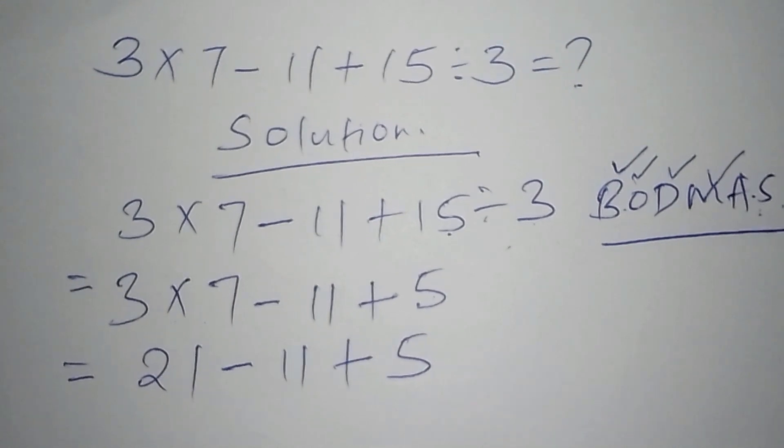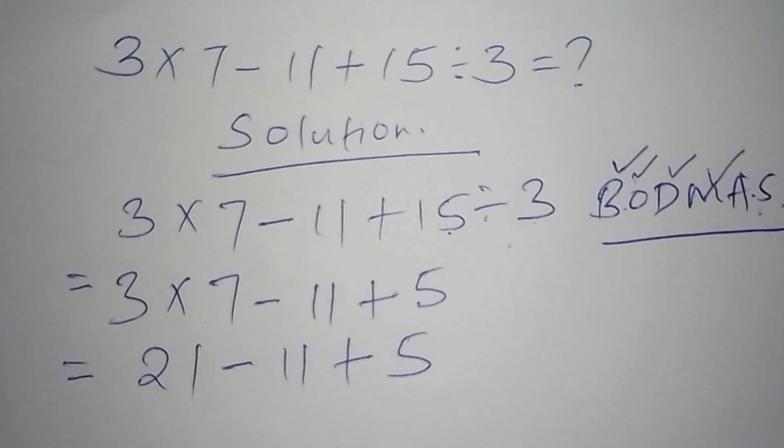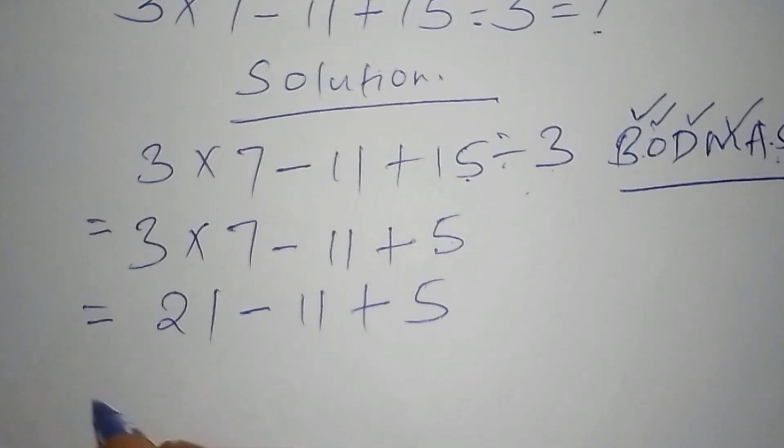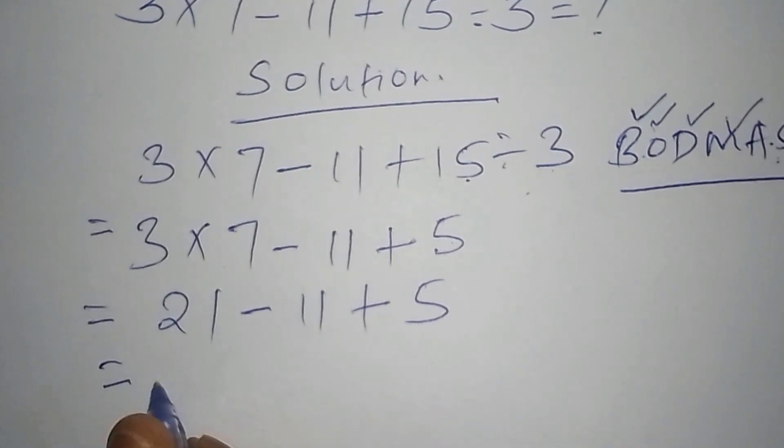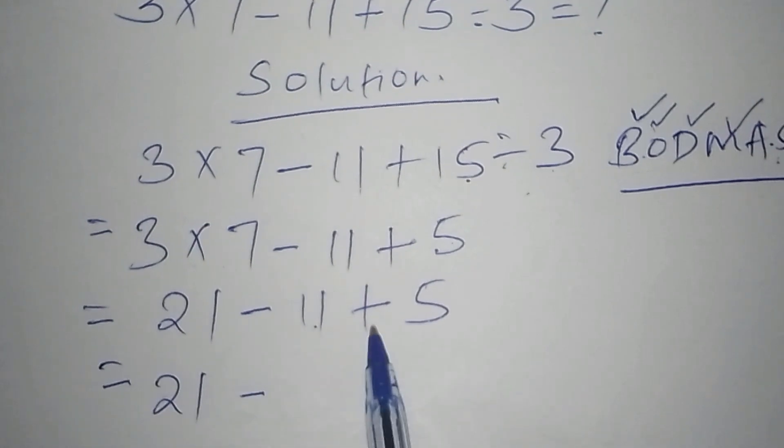When you follow the correct order of operation, you find that the maths becomes so easy. Our next step now, we shall now have, this one equals to 21 minus, then work out 11 plus 5.